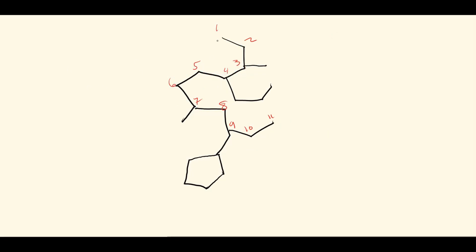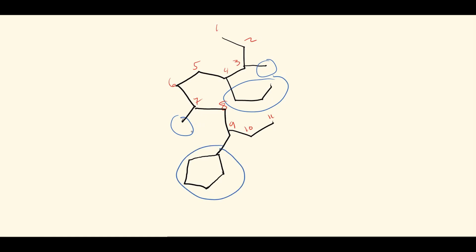The parent chain is now appropriately numbered. We identify all substituents branching off the main chain: we have four groups in total. Two of them — this one and this one — are both methyls.